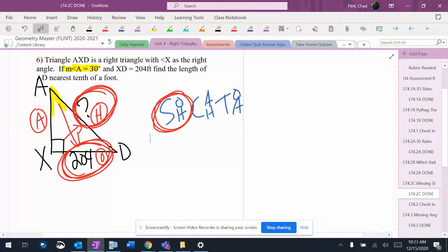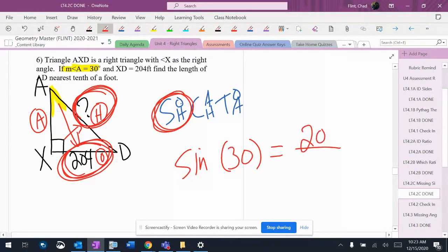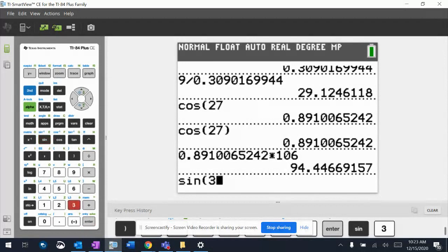So I'm going to set my problem up and fill in what I know. Sine of the angle equals the fraction. The angle is 30. The opposite is 204. I do not know the hypotenuse, so I'm going to put an X on there. I'm going to take the calculator and put in sine of 30.